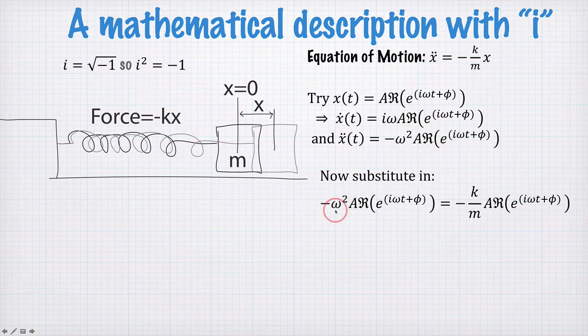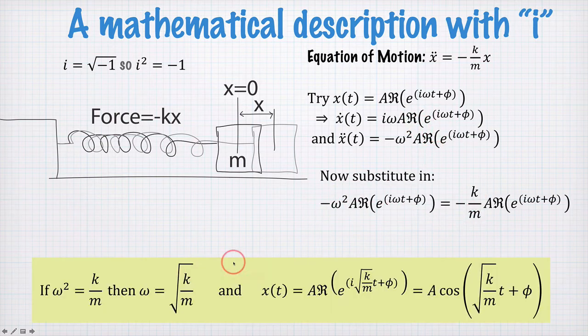So again, we have the same condition, that omega squared must be equal to k on m. Take the positive root, and then we can write x of t is equal to A, the real part of all of this. And the real part of this function is the cosine.